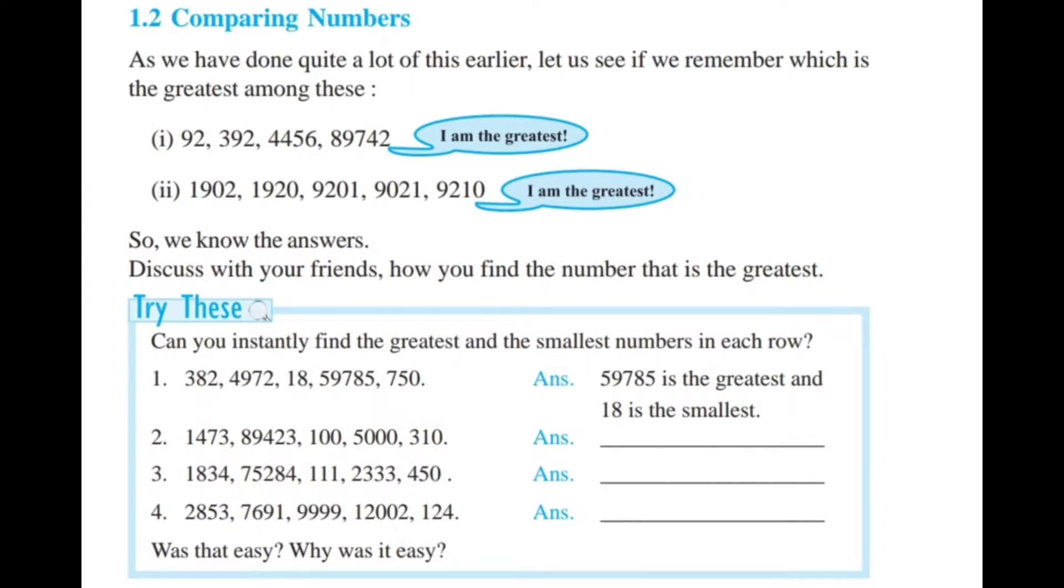In this lesson the first concept is comparing numbers. You have already learned in the previous class to compare numbers to find which is the greatest and which is the smallest. Let us see some examples. First one: 92, 392, 4456 and 89,742. What is the greatest number? 89,742 is greatest.